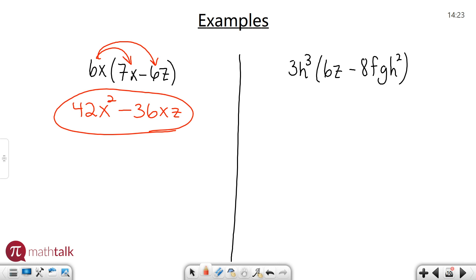We have 3h³ times this expression in parentheses. Take 3h³ and multiply by the first term. 3 times 6 is 18. H³ and z are different variables, so I'll just write them down.